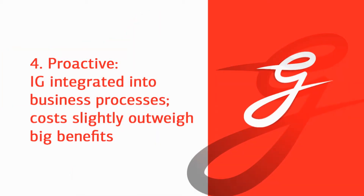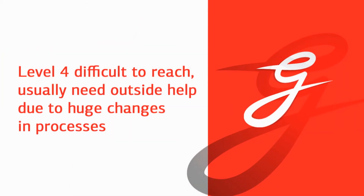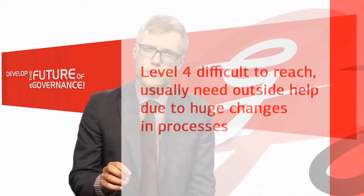The fourth level of maturity is called Proactive. On that level, information governance is integrated into daily business processes. Issues related to information governance are discussed daily, and very clear business benefits appear, while costs still outweigh the benefits slightly — though it has gotten much better. It is actually quite difficult for an organization to achieve the fourth level, and in order to get from the third level to the fourth, the organization usually needs outside help because the change in processes is quite large.